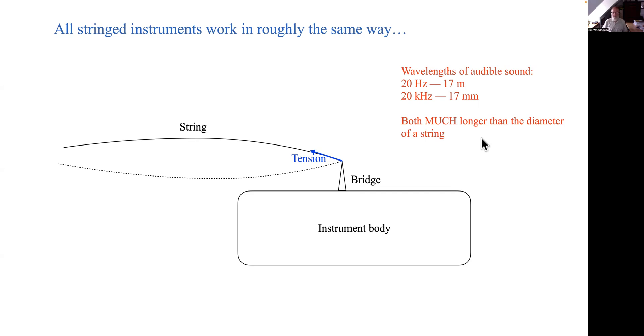And for reasons that we'll meet in the next talk, what that means is that a vibrating string is a very bad way to radiate sound into the air. The string is simply too thin compared with the wavelength. The air just flows around the vibrating string.